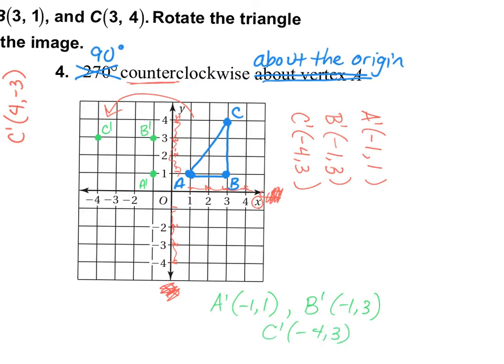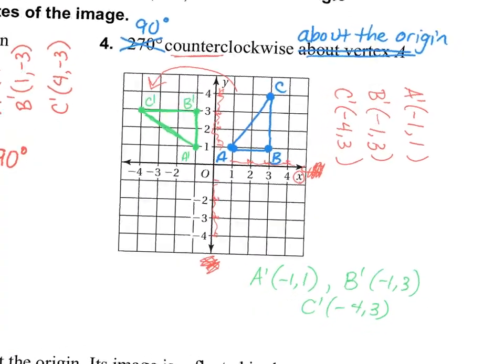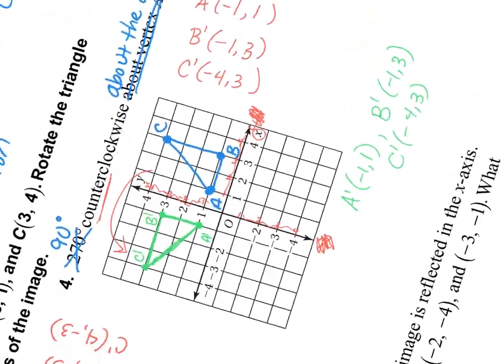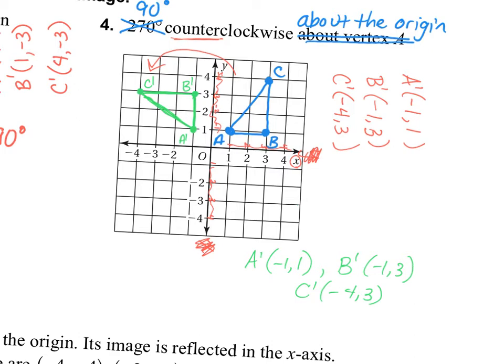Now we have our triangle. Notice that it has rotated — it's sideways, but this time it's counterclockwise. If we take a look at our original triangle and turn it sideways counterclockwise, it looks right. So that's how we do the 90 degrees clockwise and 90 degrees counterclockwise rotations.